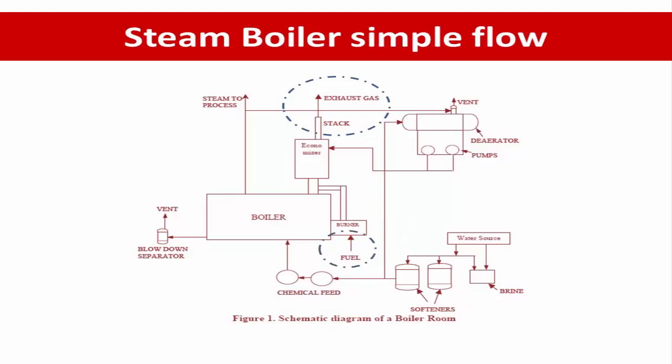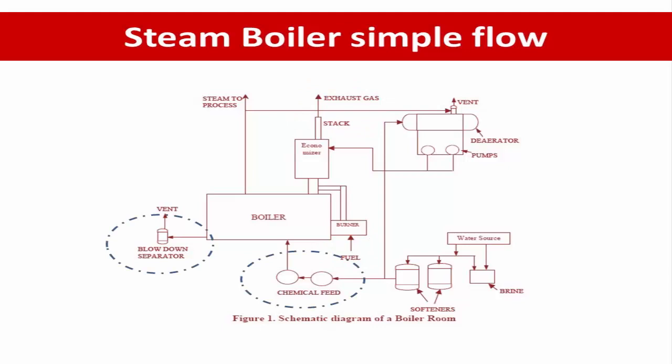The third input is the fuel feeder, such as coal feeder or others. The output of the fuel is ash, which is discharged from the hopper bottom. The last input to the boiler is the chemical, which is required for water treatment. The output of the chemical will come out with the blow-down and draining system.